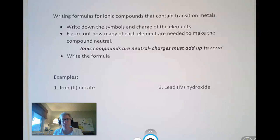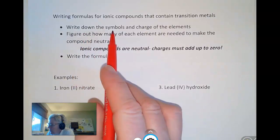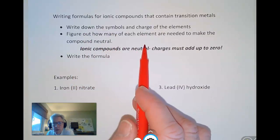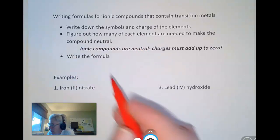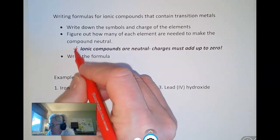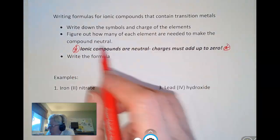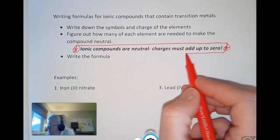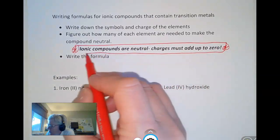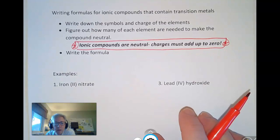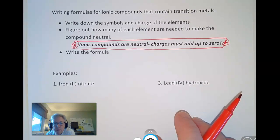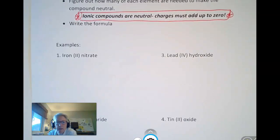So we're going to write formulas for ionic compounds that contain transition metals. So I wrote out the directions. We're going to write down the symbols and the charges. We're going to figure out how many of each element we need to make it neutral. And then we'll write the formula. So this sentence right here, you should probably photocopy 5,000 times and tape it on the wall next to your pillow, right next to your periodic table, because that's the key to this whole thing. The ionic compounds are neutral and the charges have to add up to zero. So let's just practice this first one.